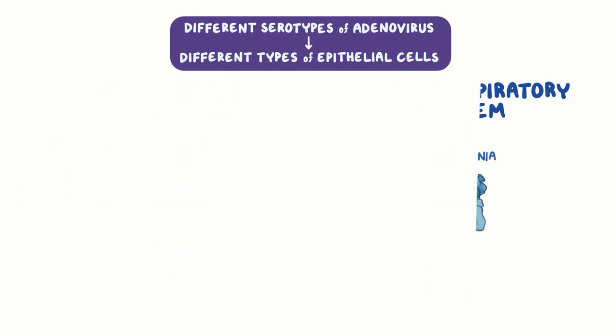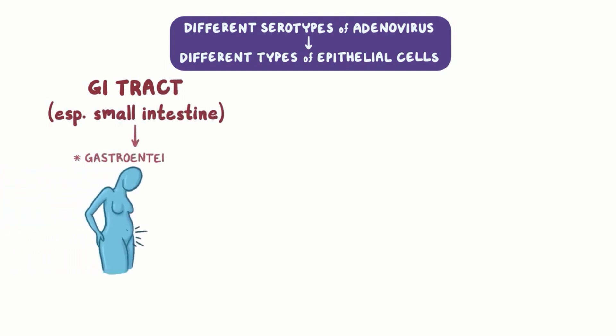Some serotypes prefer the epithelial cells of the GI tract, particularly those of the small intestine, causing gastroenteritis.